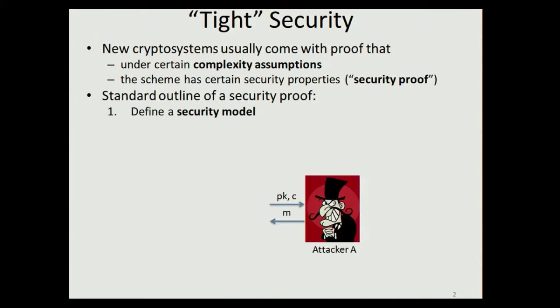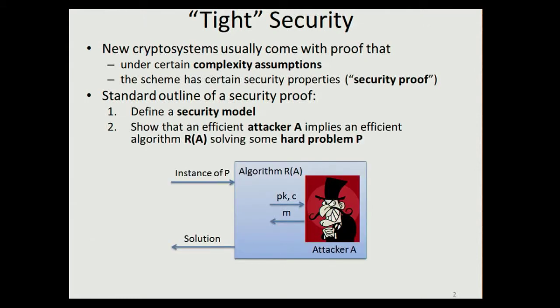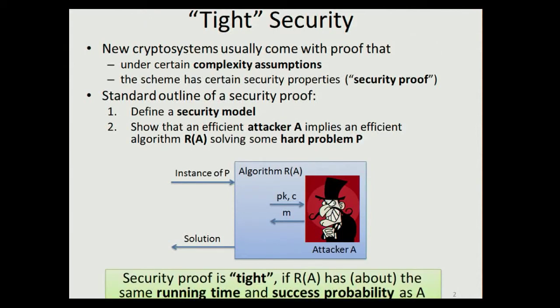A standard outline of such a security proof is the following. We first define a security model which describes the input to an attacker and the output of a successful attacker. We show that any such efficient attacker implies an efficient algorithm R(A), where R is the reduction, which is able to solve some problem assumed to be hard. We say the security proof is tight if R(A) has about the same running time and success probability as the attacker A.